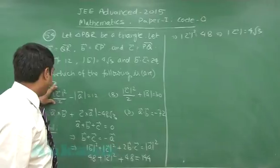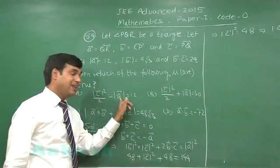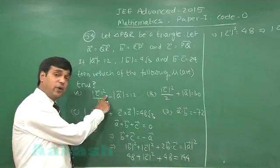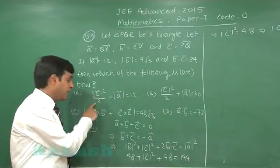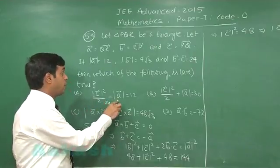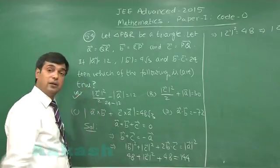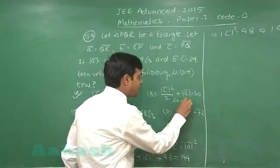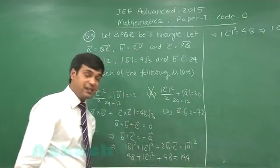Looking at option 1: |c|²/2 − |a| = 48/2 − 12 = 24 − 12 = 12. This is correct. For option b, the expression evaluates to 24 + 12 = 36, not 30, so option b is incorrect.